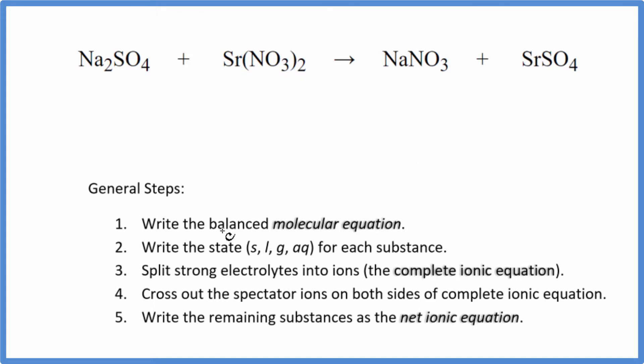So the first thing we need to do is balance the molecular equation. I can see that I have two sodiums right here and just one here. So I'll put a two as my coefficient. That balances the sodiums. Now I have two nitrates, but I have two nitrates here, so that's good. Everything is balanced. So this is our balanced molecular equation.